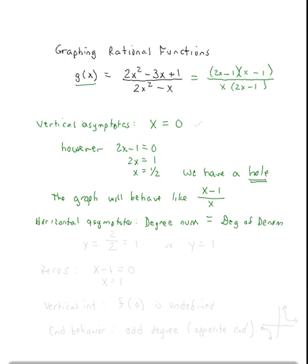So we know we can find a horizontal asymptote by dividing out the leading coefficients, 2 divided by 2. Notice we expected it to behave like (x - 1)/x. Well, 1 divided by 1 is still 1. So we know we have a horizontal asymptote when y is equal to 1.